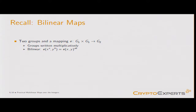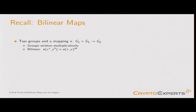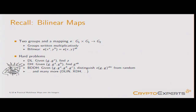Let's recall bilinear maps quickly. We have this map that goes from two copies of the same group — focusing on the symmetric setting — to another group. It is bilinear because if you evaluate the pairing, it's as if you multiply A and B. You have a bunch of hard problems: the discrete log and others, such as given G to the A find A, or given G to the A and G to the B find G to the AB.